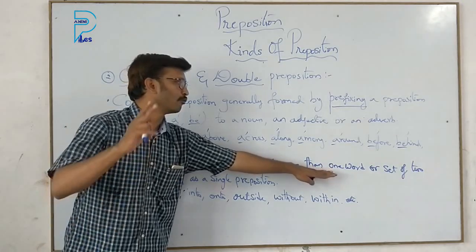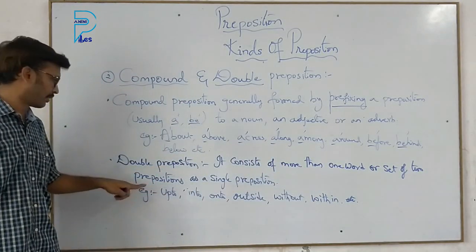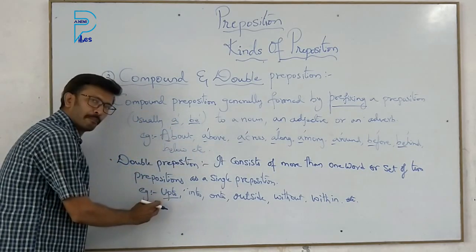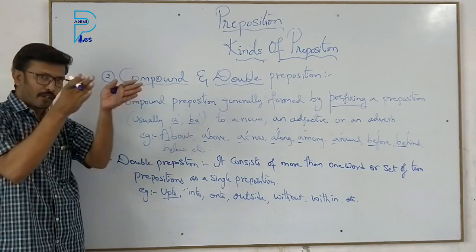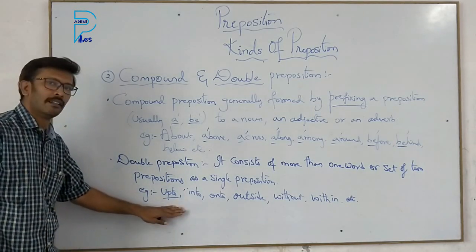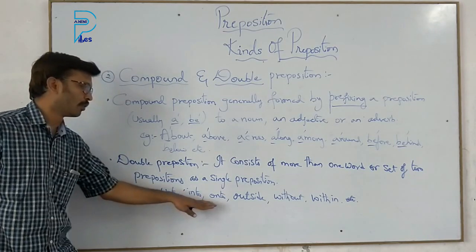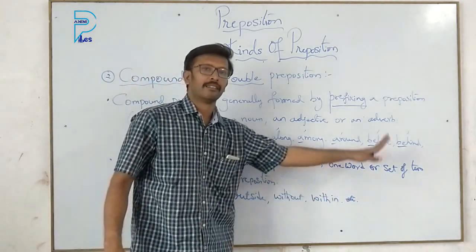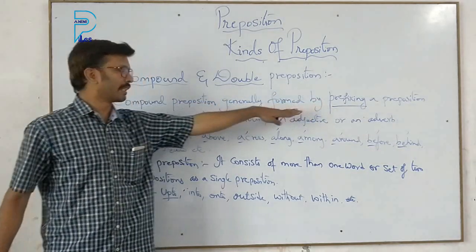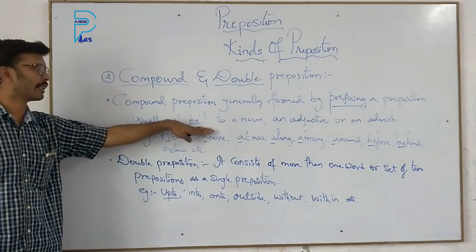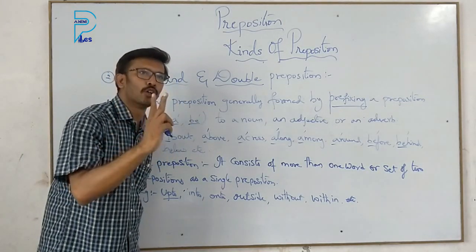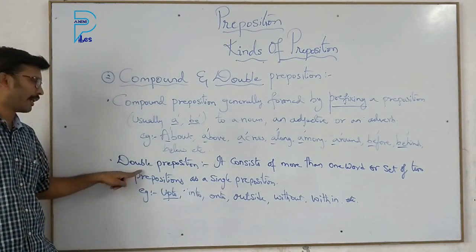Double preposition consists of more than one word — it is a set of two single prepositions joined together into one. For example, 'up to' — 'up' is a single preposition and 'to' is also a single preposition; when joined together they form a double preposition. Other examples include: into, onto, outside, without, within. So compound prepositions are formed by prefixing sounds, while double prepositions are two single prepositions joined together.